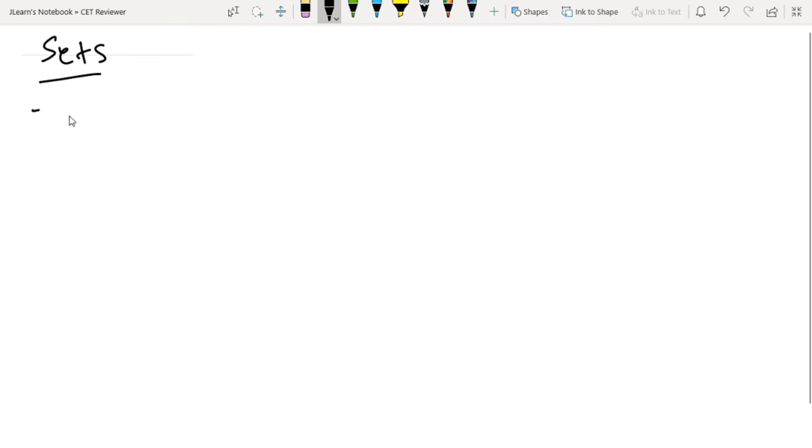So what is a set? A set is basically a well-defined collection of objects. Any collection of objects, as long as it's well-defined, is called a set. So what do we mean by well-defined? It means it is known exactly which objects belong to a set based on an objective criteria. It needs to be specific.